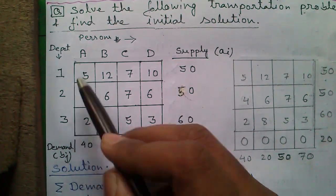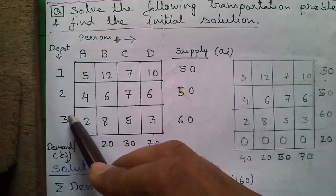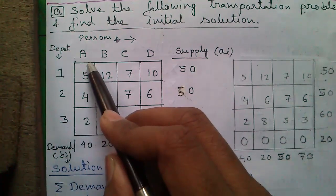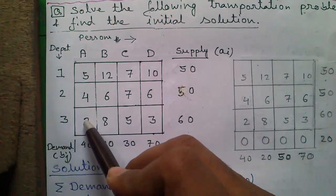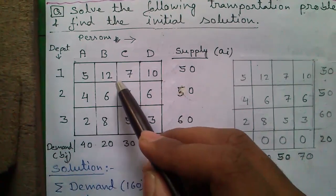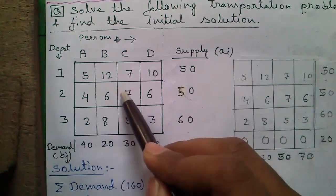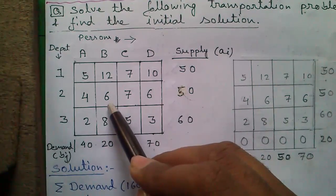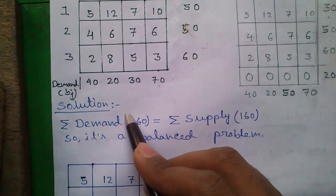But if we transport 1 unit of goods from depot 3 to customer a, our cost of transportation reduces to 2. So our objective is to allocate or transport goods in such a manner that our total transportation cost is minimum. Let's proceed to our solution.